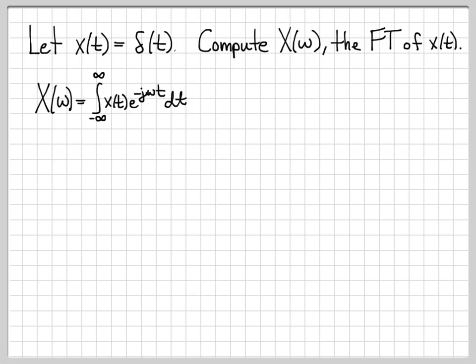We'll start by writing down the definition of the Fourier transform. x of omega, by definition, is the integral from minus infinity to infinity of x of t times e to the minus j omega t, dt. This is just the definition of the Fourier transform.